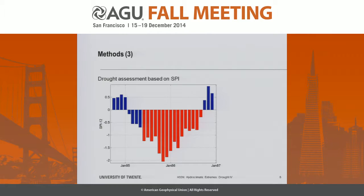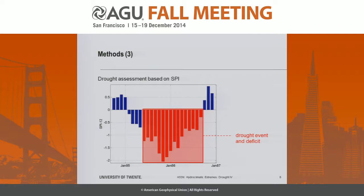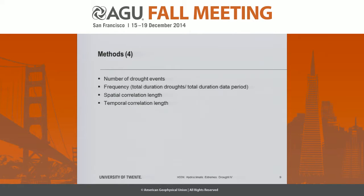This is an example of a time series of the SPI index for a couple of years. A drought event is defined as starting when the SPI drops below minus one, and ending when the SPI becomes positive again. We looked at several indicators: the deficit — the sum of all SPI values during a drought event; the duration — the length of the event; and the intensity — the largest negative SPI value during a particular event. We also examined the number of drought events, the frequency (total drought duration divided by the total length of the data period), and the spatial and temporal correlation length of the SPI.